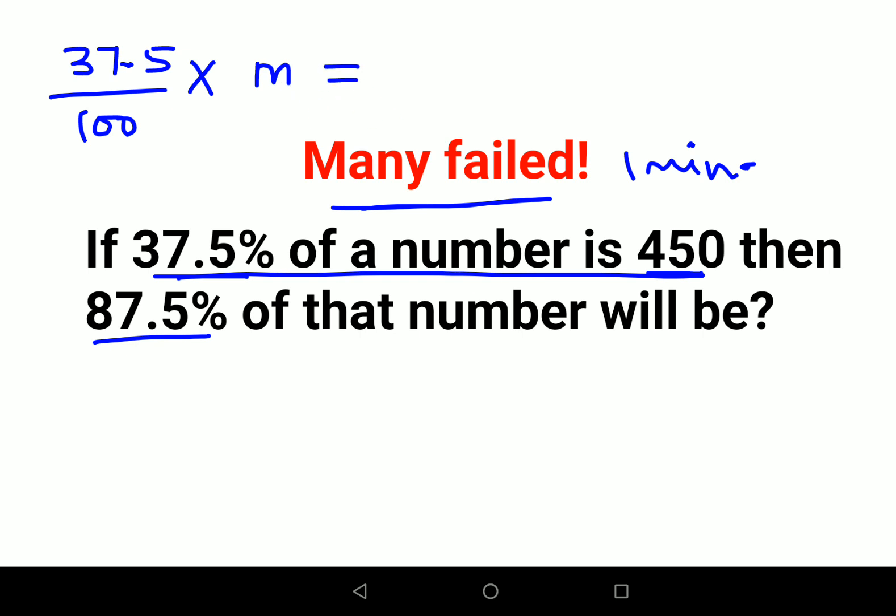M equals 450, correct? So from here I can say therefore M equals 450 into 100 upon 37.5. Now they are saying what will be 87.5% of that number? Means what? Of M.